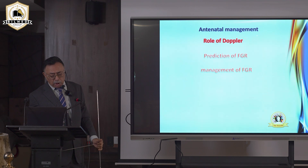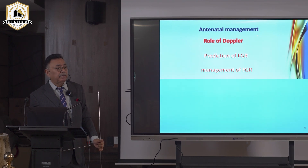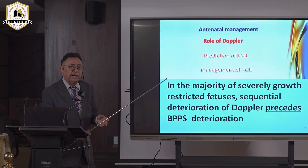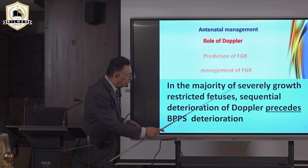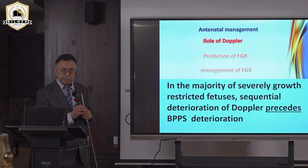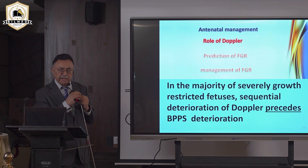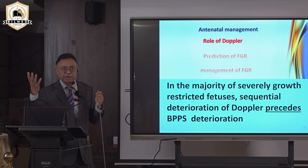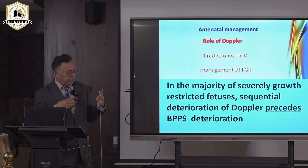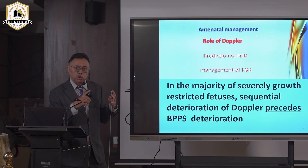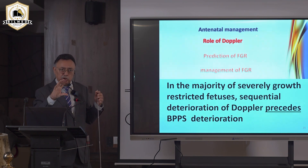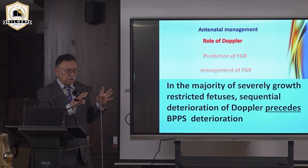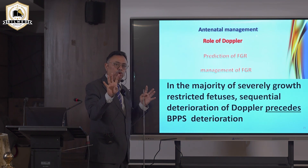In antenatal management, Doppler will predict growth retardation and guide management approximately 20 days before the biophysical profile becomes abnormal. The biophysical profile — the NST or cardiotocography plus fetal movements — uses the Manning score: one acute parameter (fetal heart rate) and four chronic parameters (fetal movement, fetal breathing, fetal tone, and amniotic fluid).